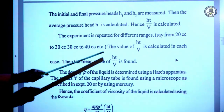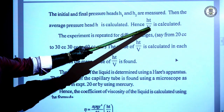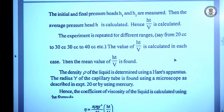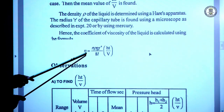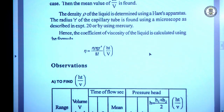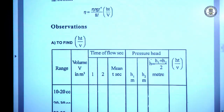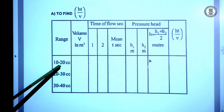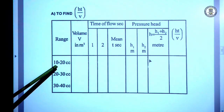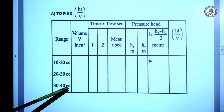From that we obtain T, H, and V values to determine H·T/V. For different ranges — say 20 to 30, 30 to 40, or 5 to 50 — we repeat the experiment. Each time we calculate H·T/V and then determine the viscosity using η = π·ρ·g·R⁴ / (8·L) × (H·T/V).